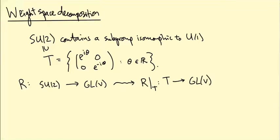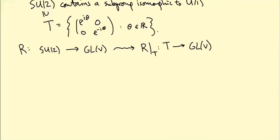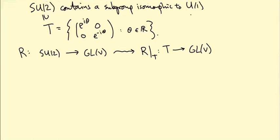And T is just isomorphic to U(1) and we know all the U(1) representations. They're just direct sums of irreducible ones and the irreducible ones are all one dimensional.